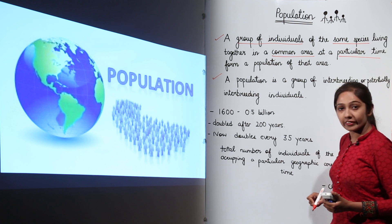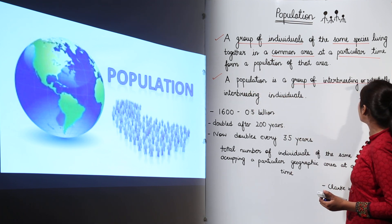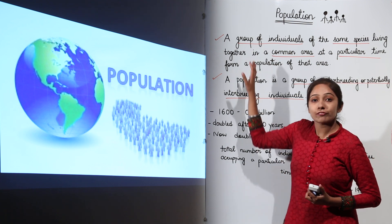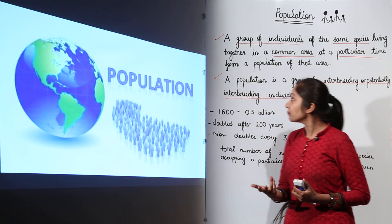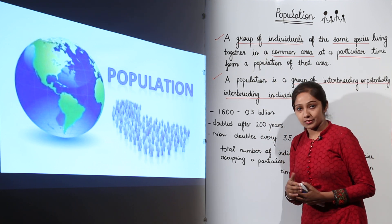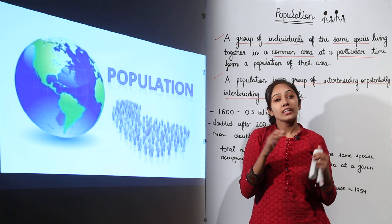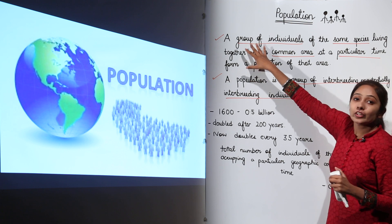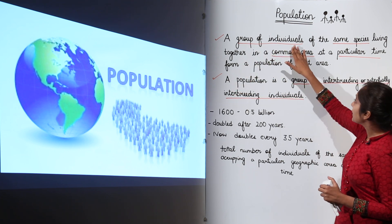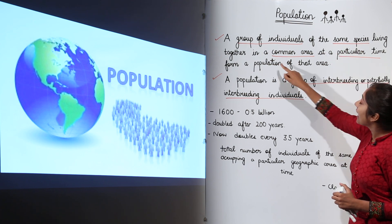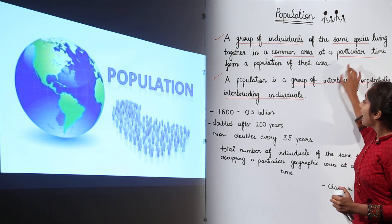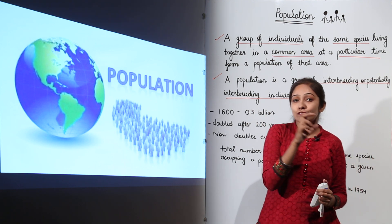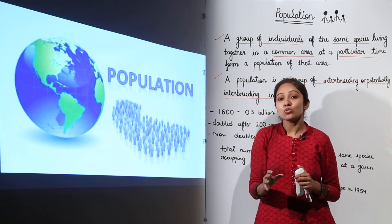Another definition from geneticists: a population is a group of interbreeding or potentially interbreeding individuals. For example, frogs — Rana tigrina — living in a particular pond correspond to a population because they are a group of individuals of the same species, living in a common area at a particular time, and they are interbreeding or potentially interbreeding individuals.